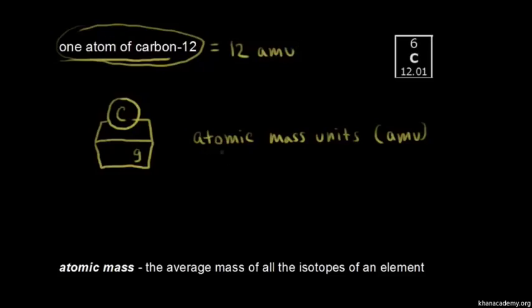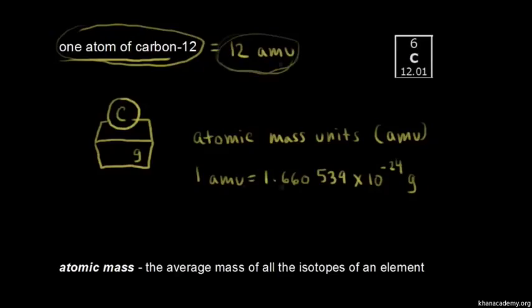Just to give you an idea of the mass of an AMU, so one AMU is equal to 1.660539 times 10 to the negative 24 grams. So if you wanted to know the mass of a carbon-12 atom in grams, one atom of carbon-12 is equal to 12 AMUs. One AMU is equal to this many grams.